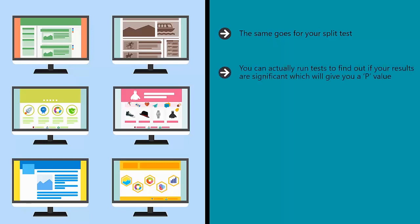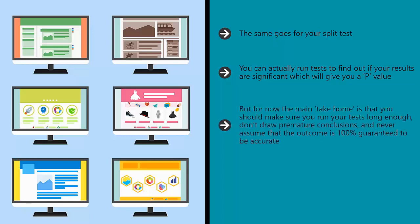You can actually run tests to find out if your results are significant, which will give you a p-value. This p-value tells you the percentage likelihood that the outcome was a fluke, with anything less than 5% (p greater than 0.05) being considered significant. But for now, the main take-home is that you should make sure you run your test long enough, don't draw premature conclusions, and never assume that the outcome is 100% guaranteed to be accurate.